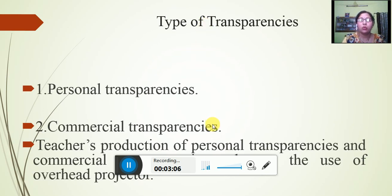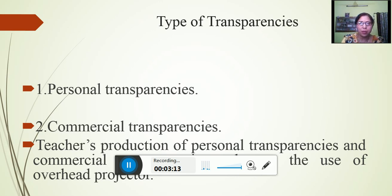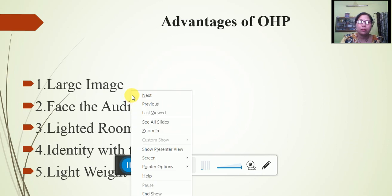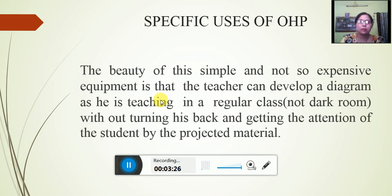Now, type of transparency — there are two types of transparency: personal transparency and commercial transparency. The beauty of this simple and not so expensive equipment is that the teacher can develop a diagram, a picture. We can easily show these to the children in the classroom.